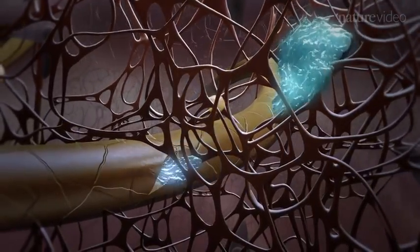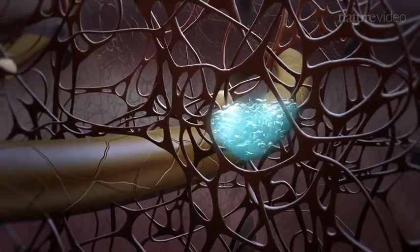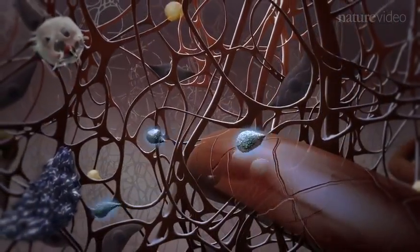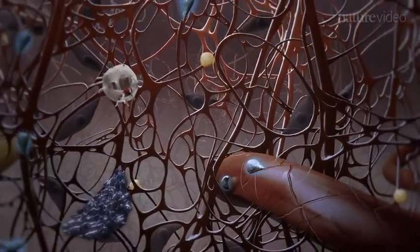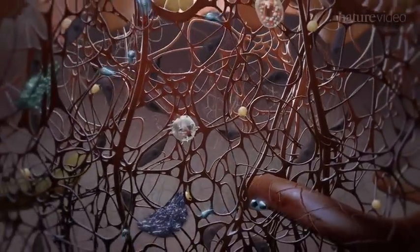Activated dendritic cells migrate to the lymph nodes, where they present antigen from the site of infection to naive T-cells, priming them to activate and differentiate into effector T-cells.